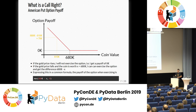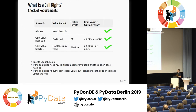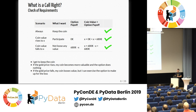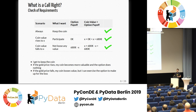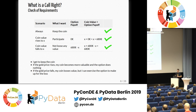Let's check if this works for me. First, whatever the scenario, I get to keep my coin — we don't mess with the coin. Second, if the coin value rises, I want to participate. Since the option pays off nothing but also costs nothing at that moment, my future value will be x, which is larger than 680 euros — I made money. If the coin value falls to some value x, I don't want to lose anything. The option pays off 680 minus x, which I add to x, the coin value. I end up at 680 euros again. So the American put option setup works and gives me all my requirements.